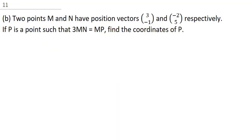So, the next question says we should solve this question, which is 2 points M and N have position vector, 3 minus 1 and minus 2, 5 respectively. If P is a point such that 3 M N is equal to N P, find the coordinates of P.